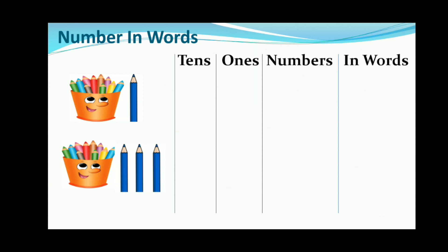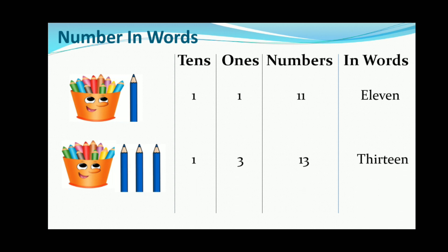Number in words: here is an example. There is 1 ten and 1 one — the place value is 11, and we write eleven: E-L-E-V-E-N. Same for number 13: 1 ten and 3 ones — the place value is 13 and we write thirteen: T-H-I-R-T-E-E-N.